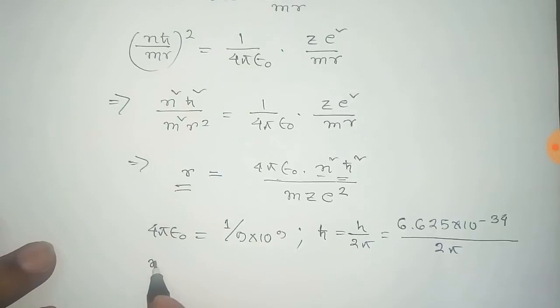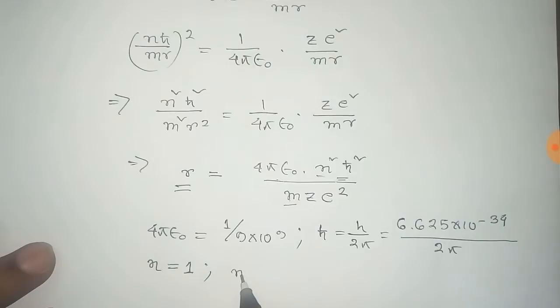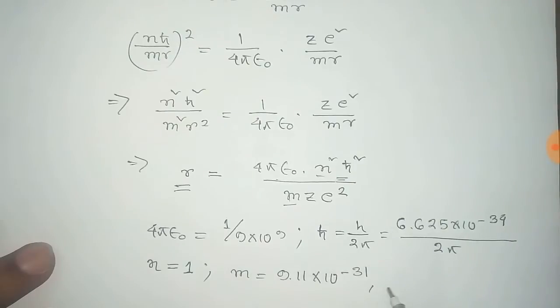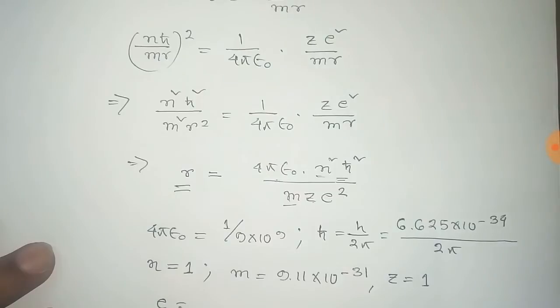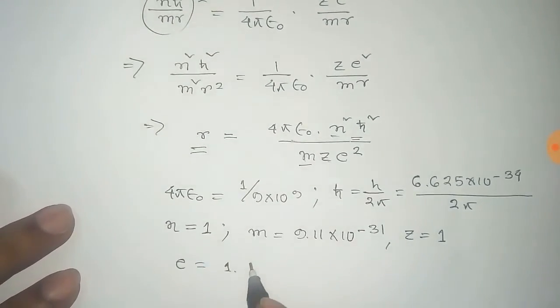For the hydrogen atom, N equals 1, M is the mass of the electron 9.11×10⁻³¹ in SI units, Z for hydrogen equals 1, and E is the charge of the electron 1.6×10⁻¹⁹.